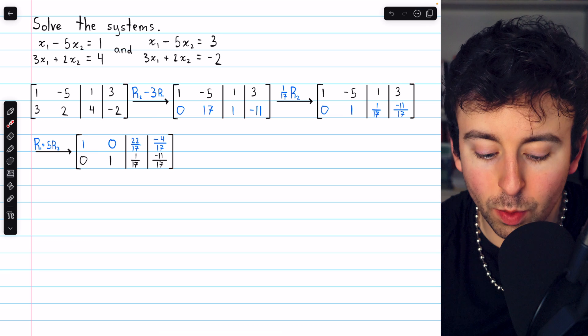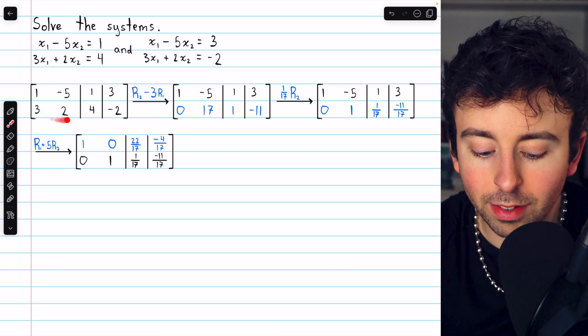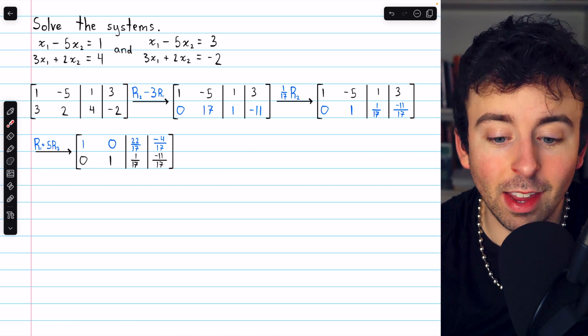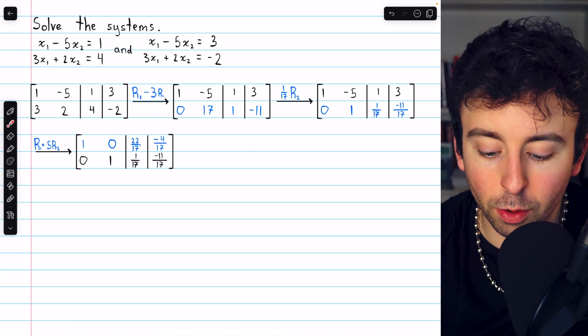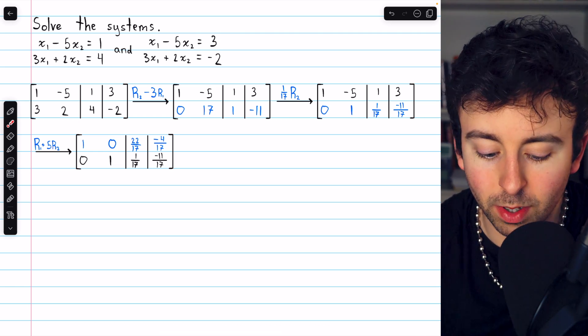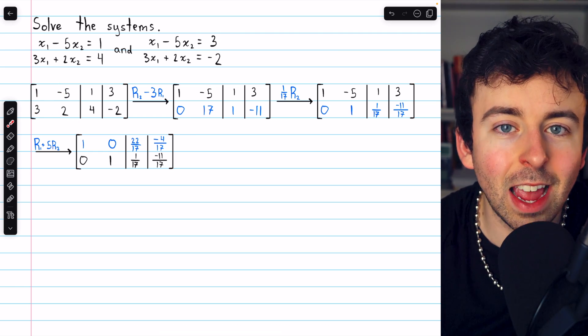Here it is. It's like we set up an augmented matrix for one system. Here's the coefficients. Here are the constants. But why not do both at the same time? We can just throw in another column of constants from the other system of equations because the coefficients are exactly the same.